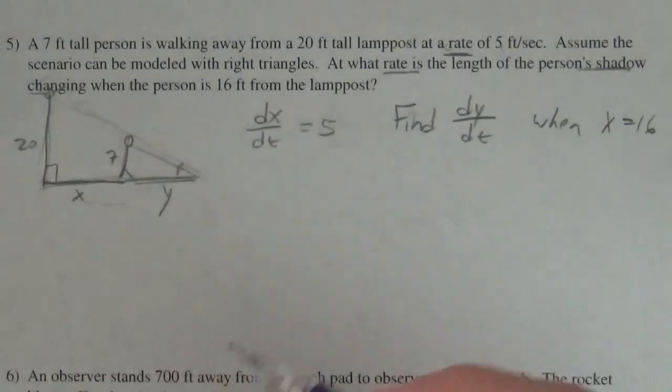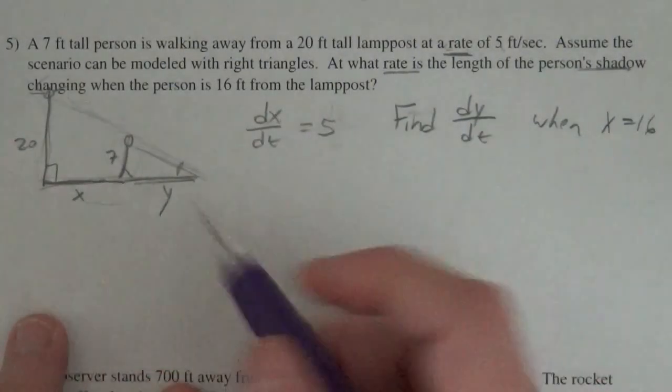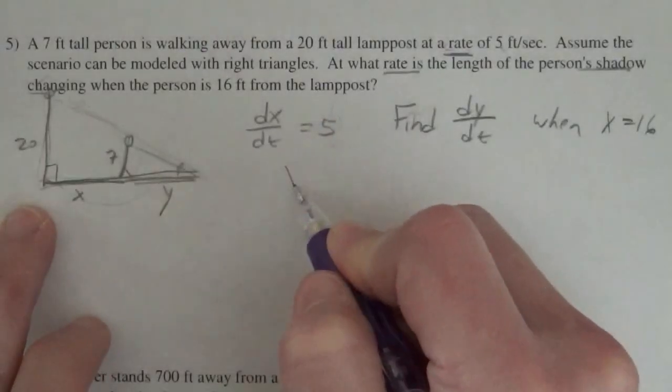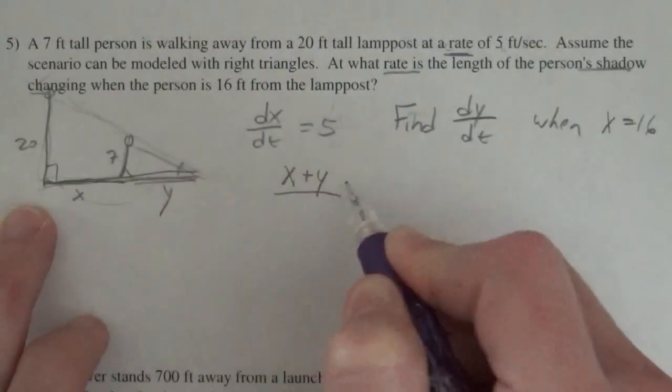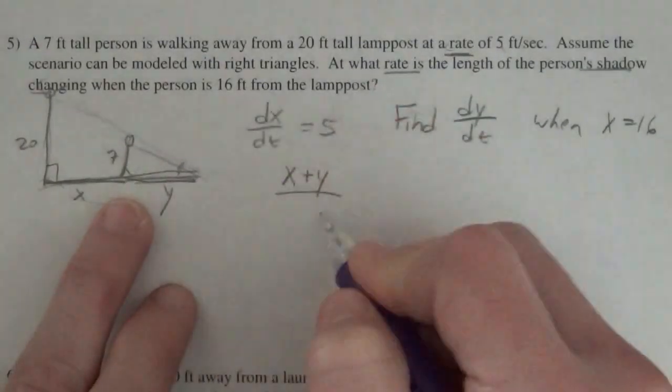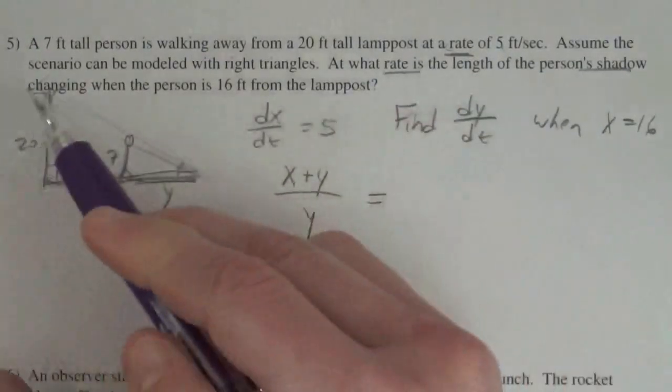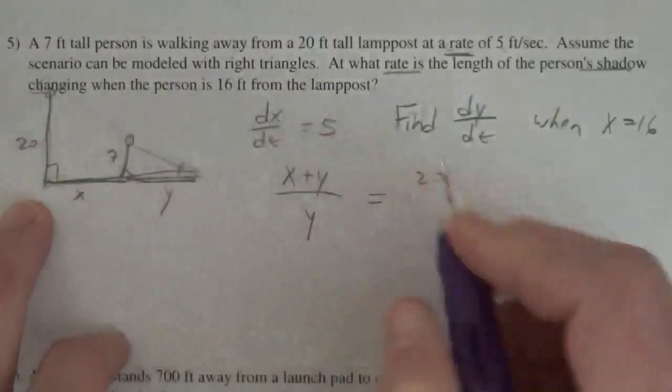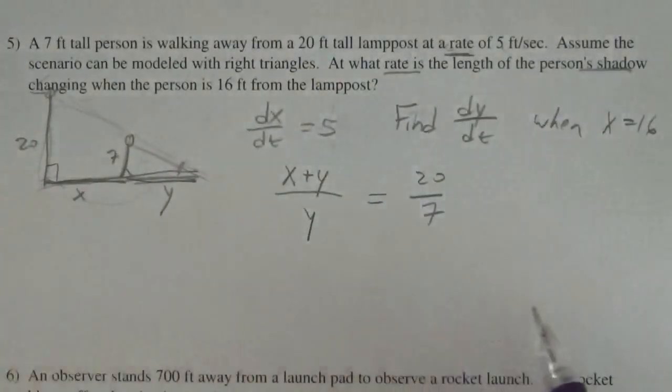And we can make proportions since they're similar triangles. So we can say the length of the big triangle x plus y is to the length of the little triangle y as the height of the big triangle 20 is to the height of the little triangle 7.